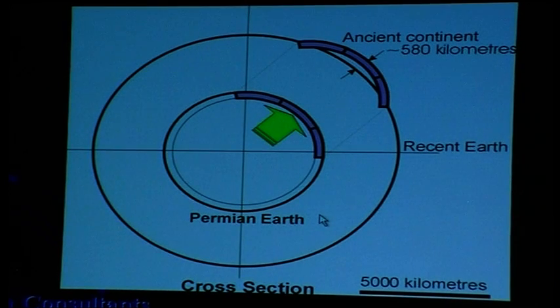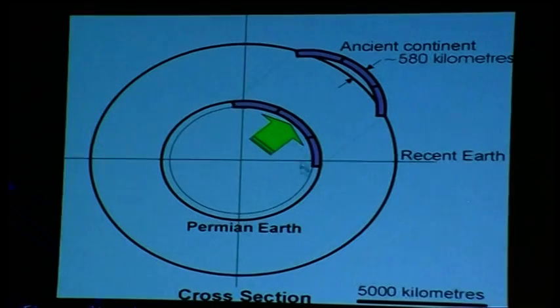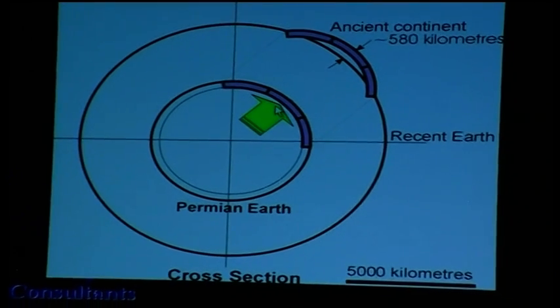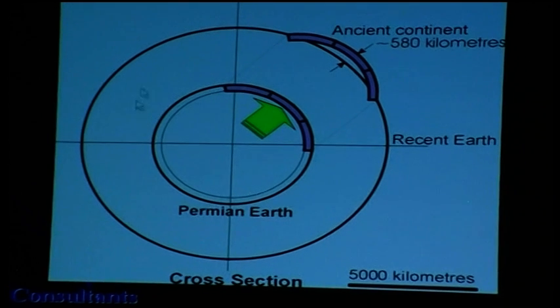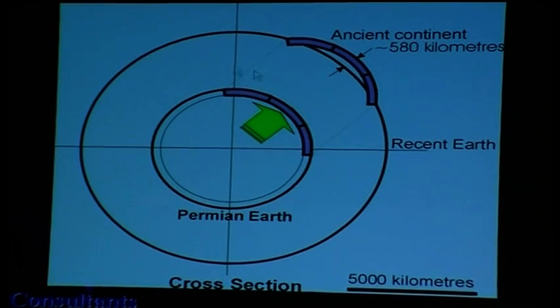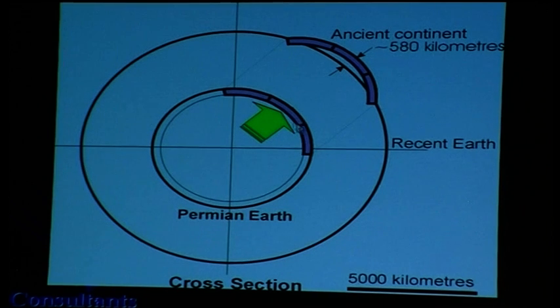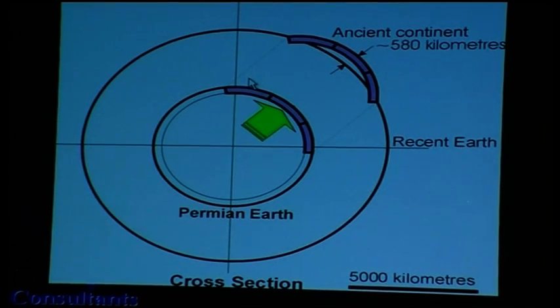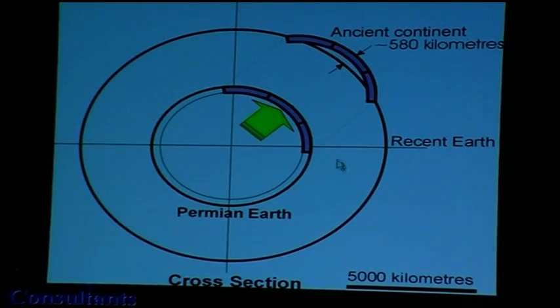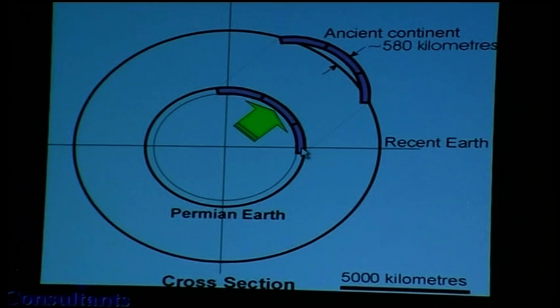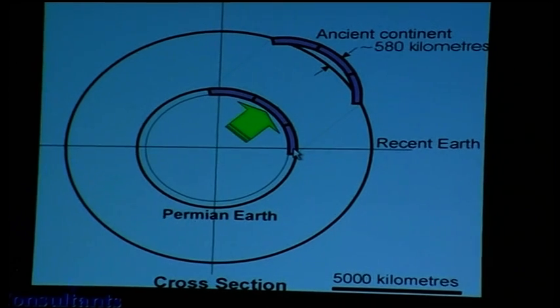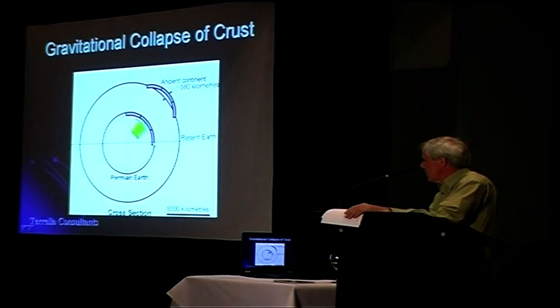Shown here is a cross section of a primitive earth, a Permian-Pangean earth at 50% of the present earth radius and the present day earth. I've also shown a little fragment of a primitive crust, just one small fragment. This is about 5,000 kilometres diameter, about the size of the present day European continent. For clarity, I've omitted the rest of the crust.